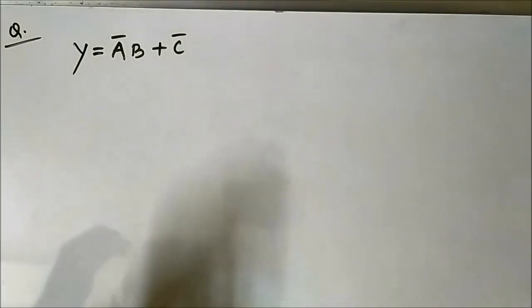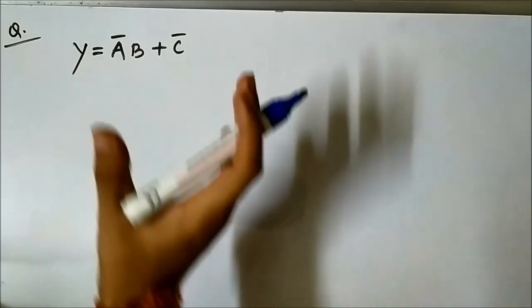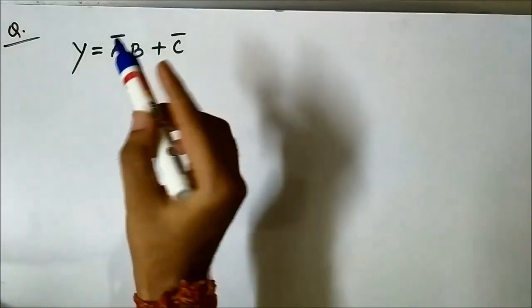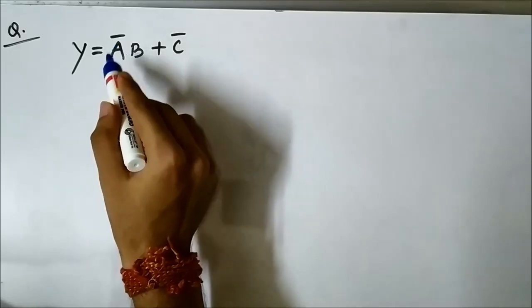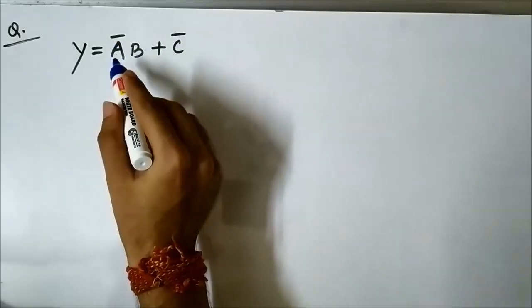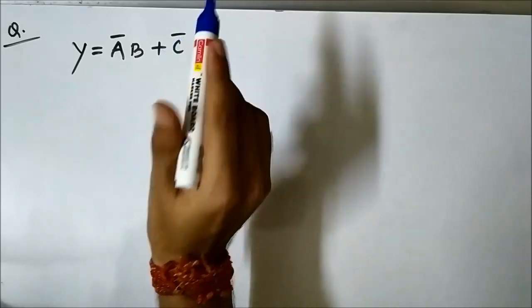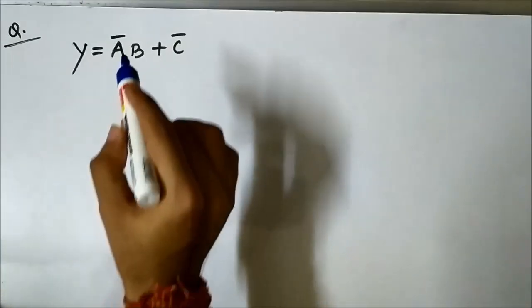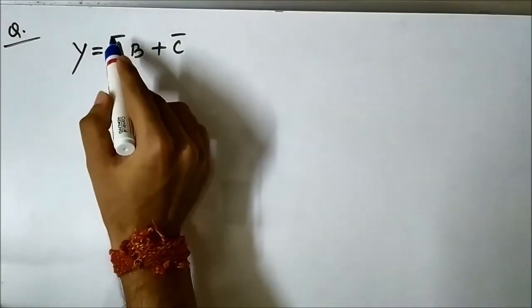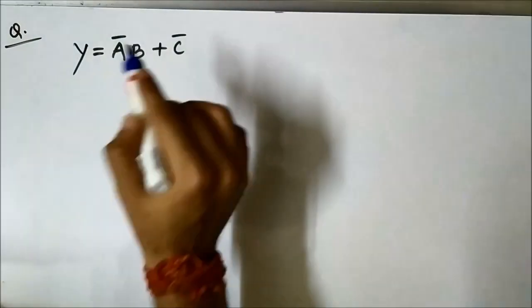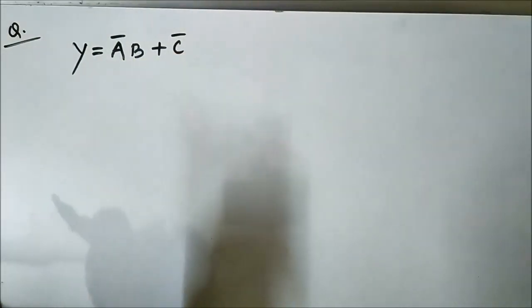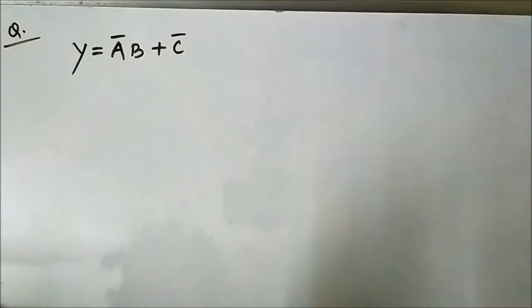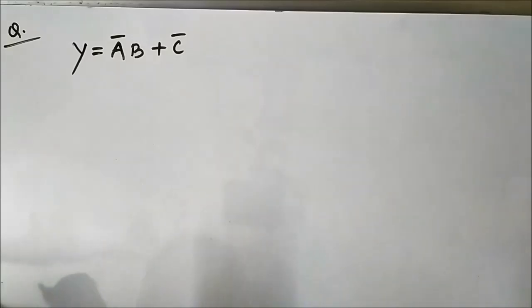Here we have another expression to implement. The expression is ĀB + C̄, meaning Ā AND B, OR C̄. The bar again requires a NOT gate, the AND operation between Ā and B requires an AND gate, and the plus sign requires an OR gate. So NOT, AND, and OR are the three logic gates required.